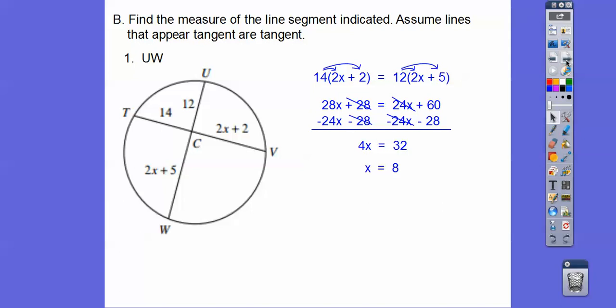Now it doesn't say find x, it says find UW. Here's UW, it's this whole segment right here. So we're going to plug in x equal 8 right there, add 5 and add 12. So UW is that 2x plus 5 plus 12, so when we plug in x equal 8, we get UW to be 33.